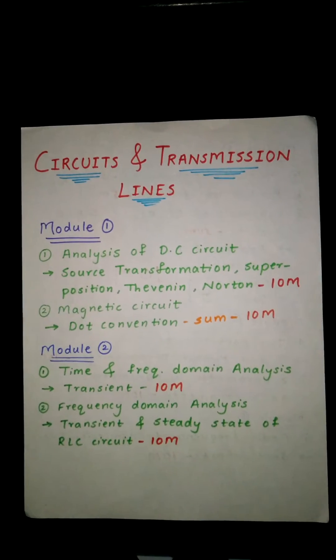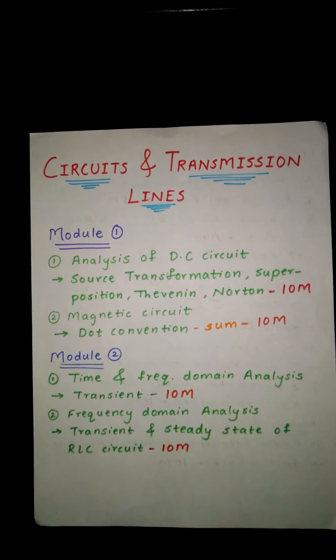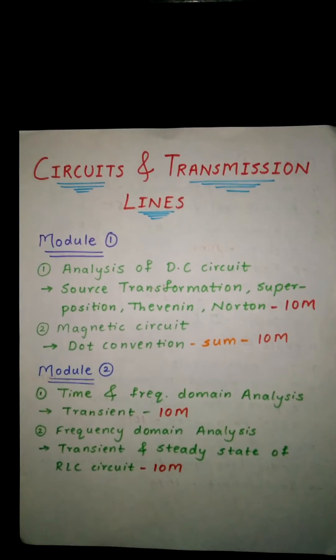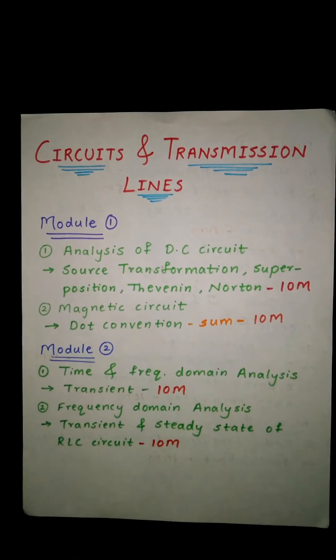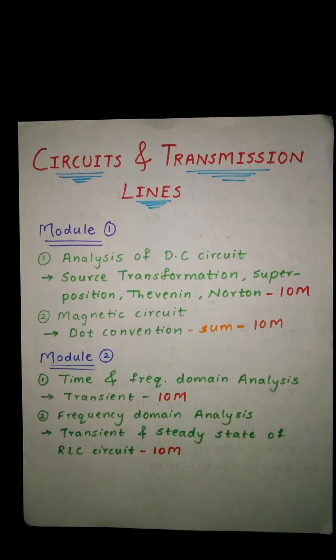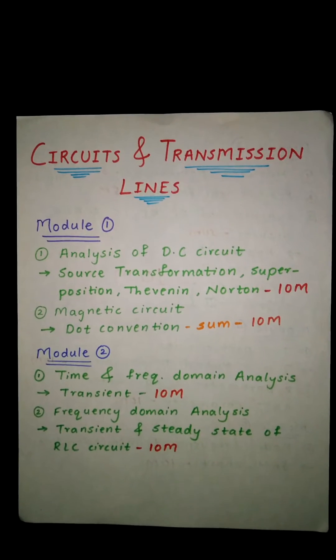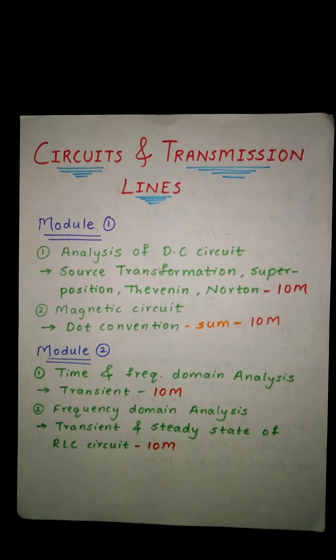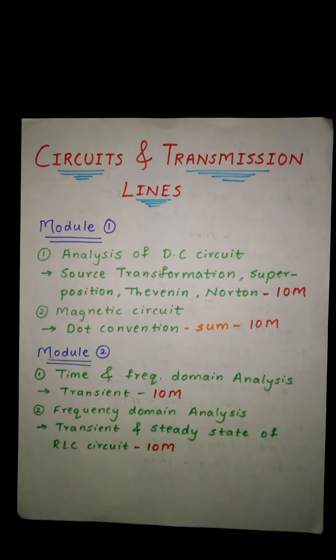From Module 2, that is time and frequency domain analysis, you will get a transient analysis sum which will be also 10 marks. Frequency domain analysis, transient and steady state of RLC circuit - here also you will get the confirmed sum of 10 marks.